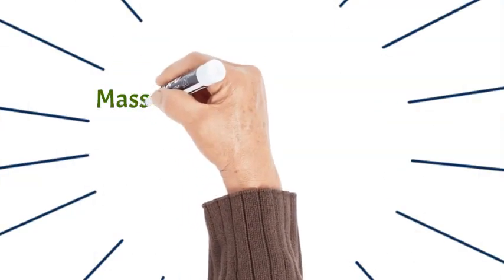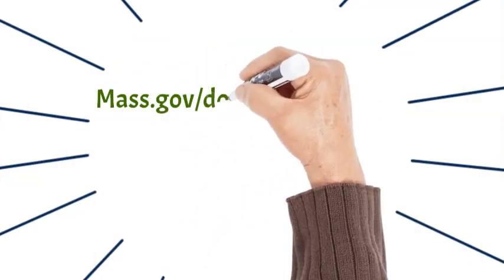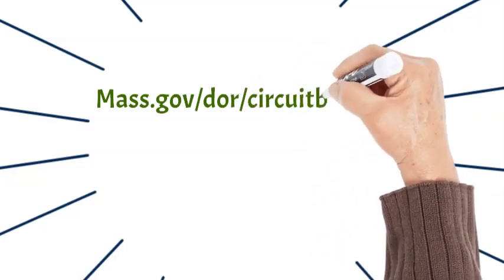Head to mass.gov/DOR/circuit breaker for all the information you'll need to claim your circuit breaker credit.